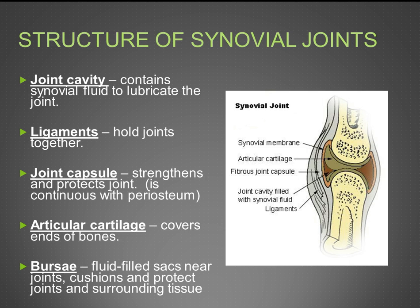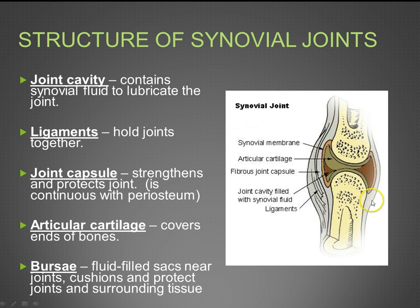You also have articular cartilage, which covers the ends of the bones and prevents them from rubbing together during joint movement, which would cause lots of pain. Then you have a bursa, a fluid-filled sac near the joints that helps cushion and protect the joints and surrounding areas. In the picture you can see the articular cartilage, the joint cavity, the fibrous joint capsule, and the ligaments that connect bone to bone to stabilize the joint.